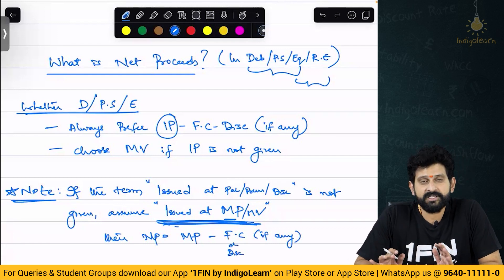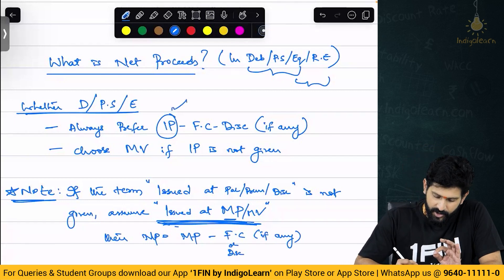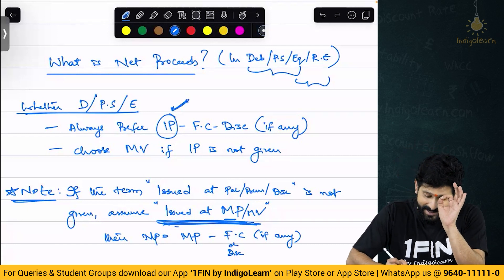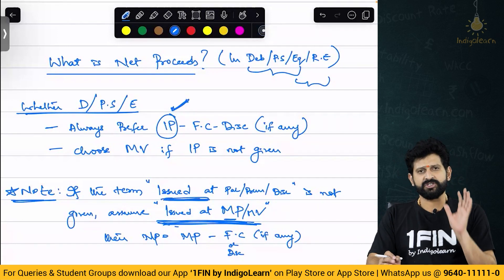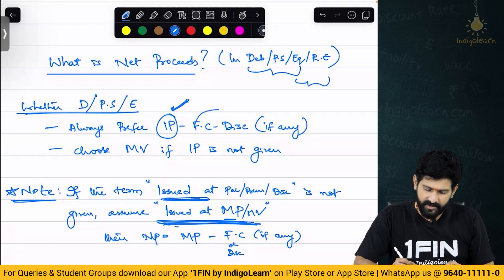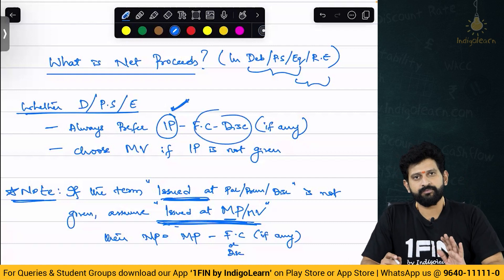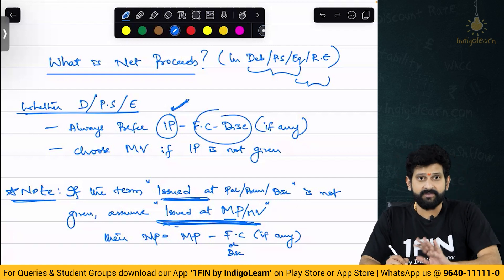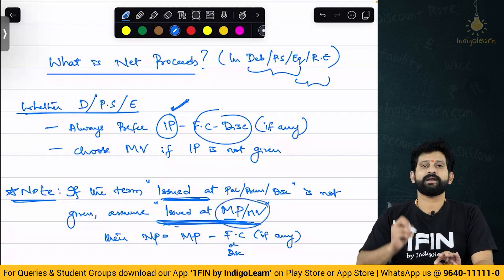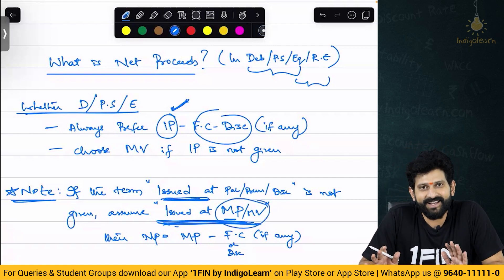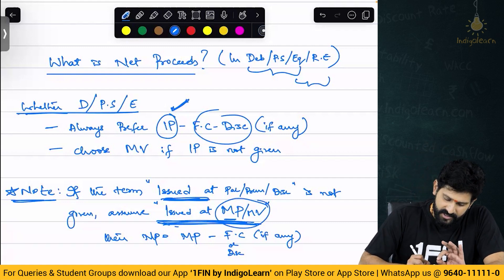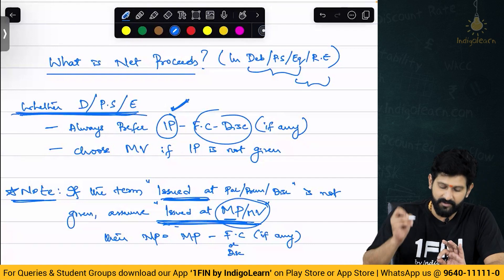I hope we are clear, friends. Always, always prefer issue price. First preference always goes to: what price is it issued at? What is the issue price? Based on that, if flotation cost is also given, consider it; if not given, ignore. If issue price is not given, then assume issued at market price. And then correspondingly reduce the flotation cost. This applies whether it is debentures, preference shares, or equity — be they redeemable or irredeemable.